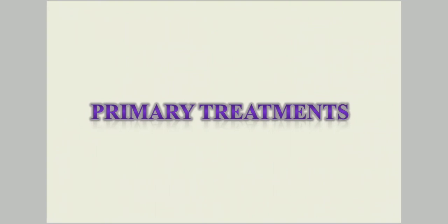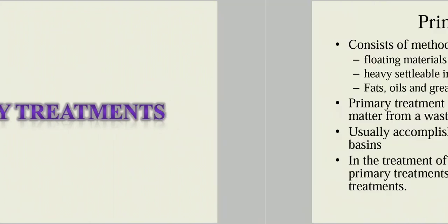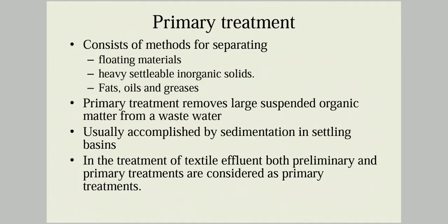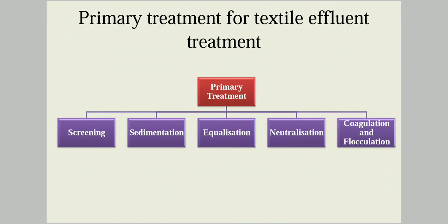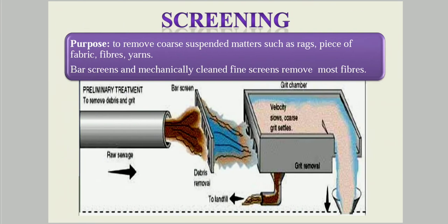Now let's look at primary treatment methods in detail. Primary treatment is employed to remove the floating materials, heavy settleable organic and inorganic solids, and fats, oils, and greases. It also removes large suspended organic matters from the wastewater. The various methods under primary treatment are: first, screening.